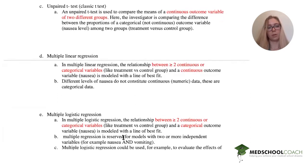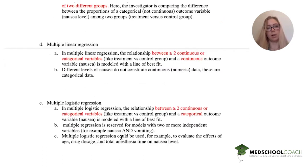A multiple logistic regression is the relationship between two or more continuous or categorical variables. So like treatment or control group, which we have, and then a categorical outcome variable. So nausea, which is modeled with a line of best fit similar to above. However, multiple regression is reserved for models with two or more independent variables.